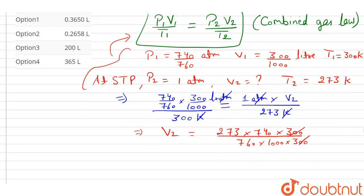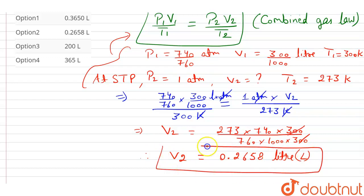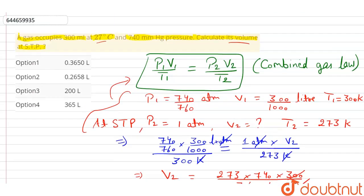300 will also cancel out. So V2 equals 273 × (740/760) × (300/1000) / 300, which gives V2 = 0.2658 litres. Therefore our volume at STP is 0.2658 litres. Option 2 is the correct answer; the rest of the options are wrong.